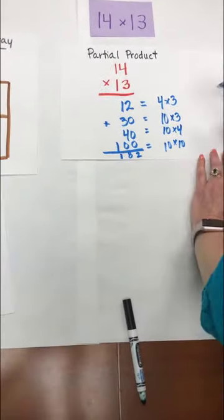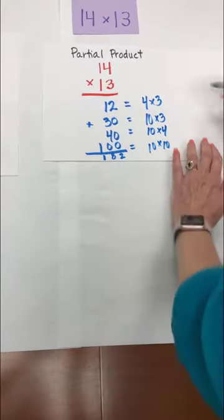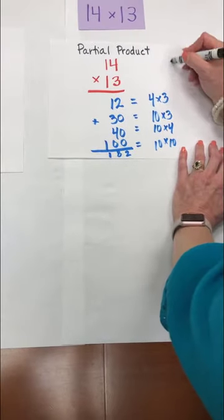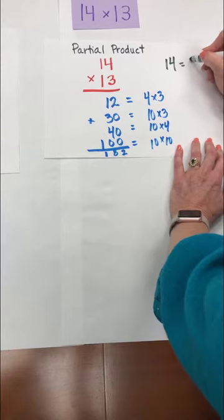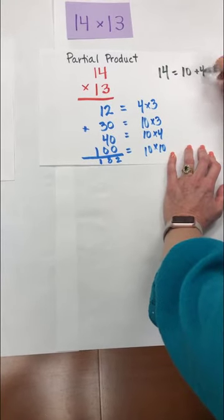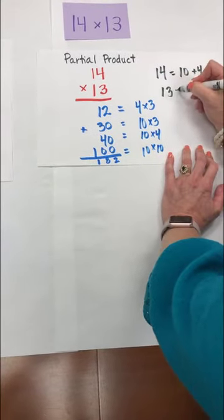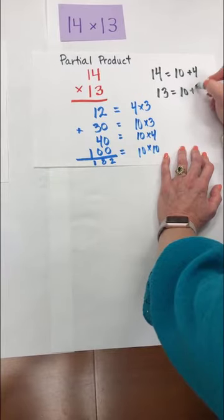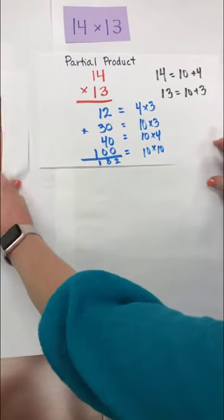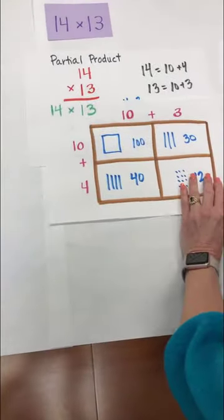Alright if students need a scaffold we can always show them that our 14 is 10 plus 4 and our 13 is 10 plus 3. Again connecting that back to this model that we did prior.